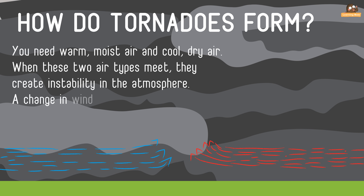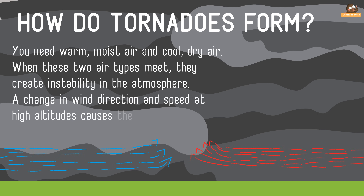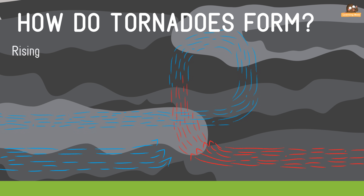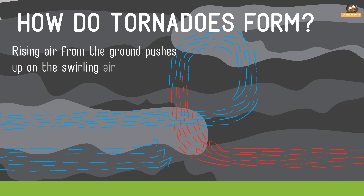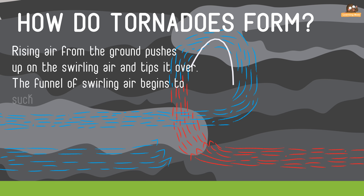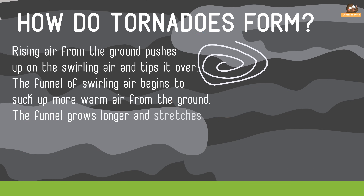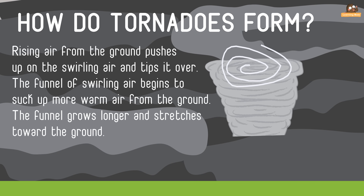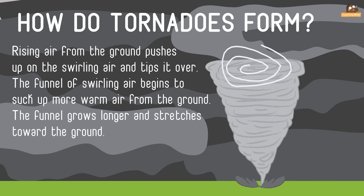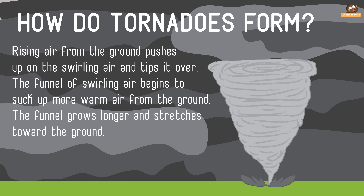A change in wind direction and speed at high altitudes causes the air to swirl horizontally. Rising air from the ground pushes up on the swirling air and tips it over. The funnel of swirling air begins to suck up more warm air from the ground. The funnel grows longer and stretches toward the ground. When the funnel touches the ground, it becomes a tornado.